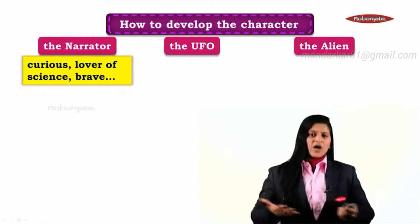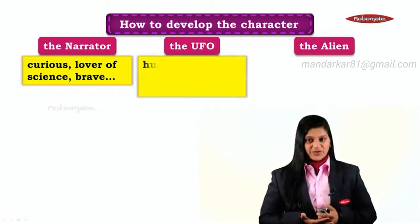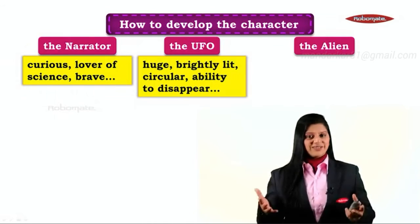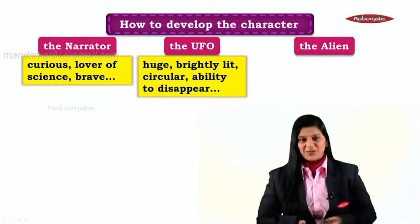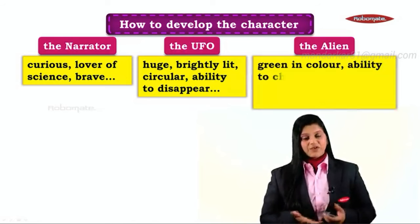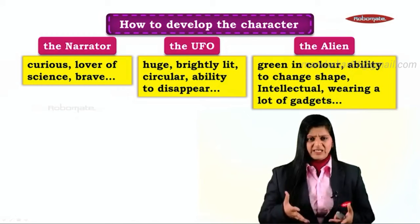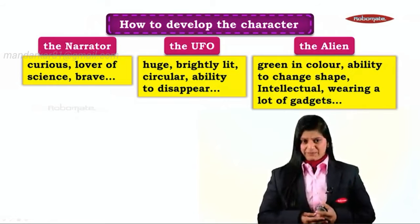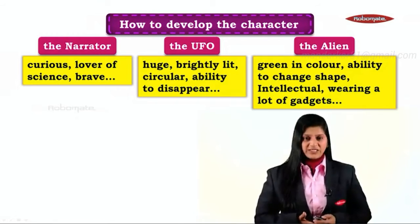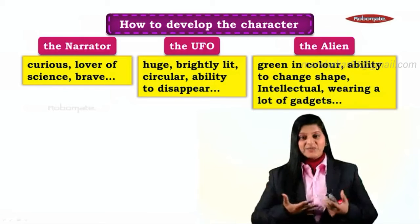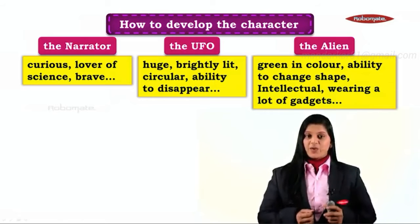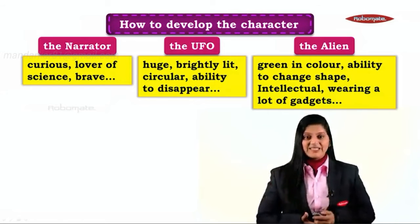Similarly, let's take the UFO. How is the UFO going to be in the story? Probably it is going to be huge, brightly lit, circular, and have the ability to disappear, and so on. Let us now focus on the alien. The alien is green in color, it has the ability to change shape, is intellectual, wearing lots of gadgets, and so on. You may add as many characteristics and details to the character, but this is going to help us write the entire story.